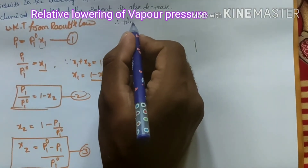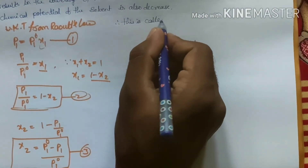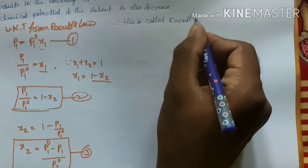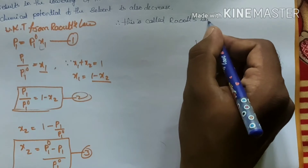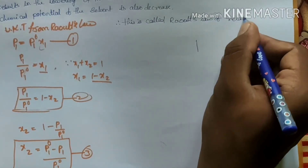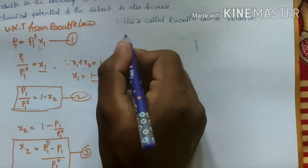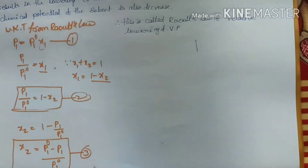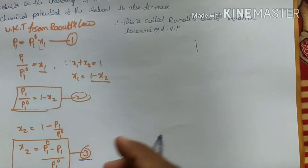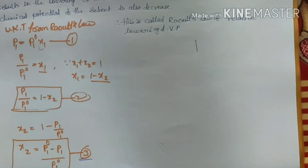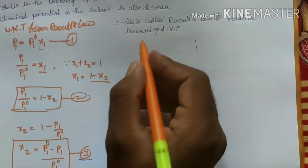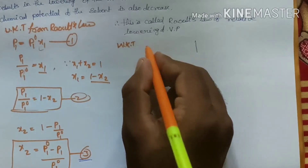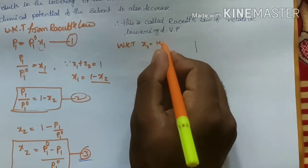This equation 3 is called Raoult's Law of relative lowering of vapor pressure. Then we simplify further. We know that x₂ is the mole fraction of the solute. The mole fraction x₂ is given by n₂ divided by (n₁ + n₂).